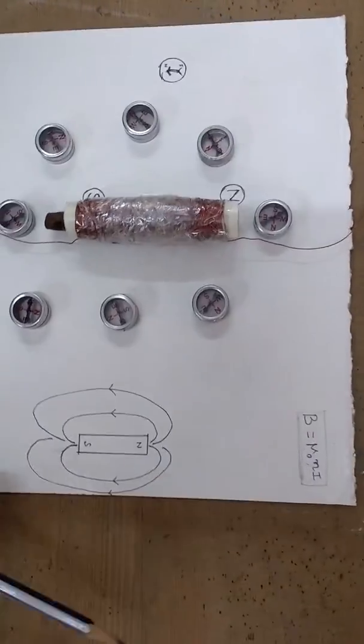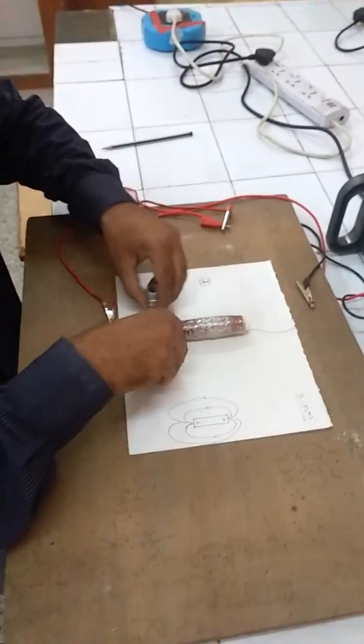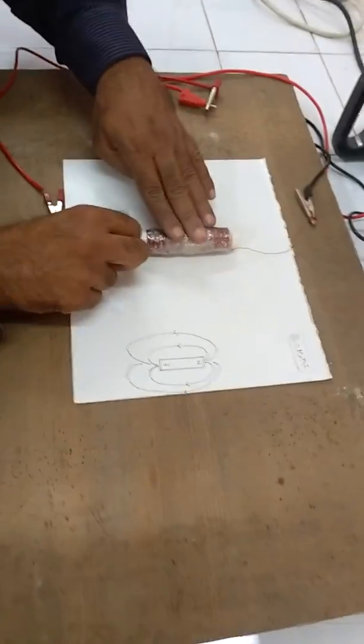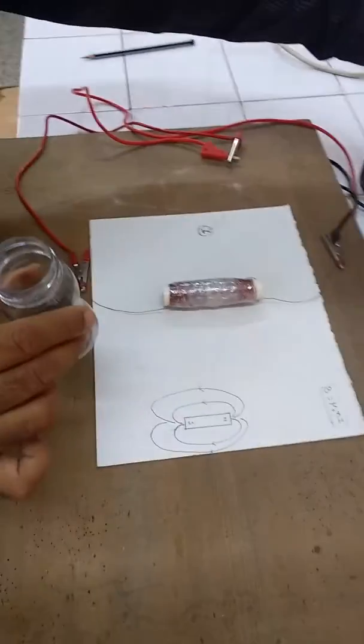The same thing I'd like to show you using iron filings. Now I'm removing all these compass needles and I'm going to use iron filings. I have the soft iron filings with me. Now I have switched on.